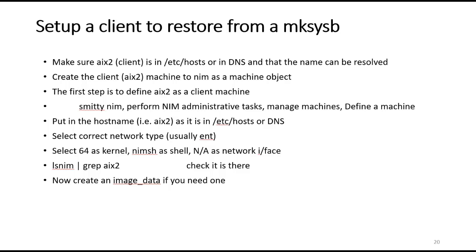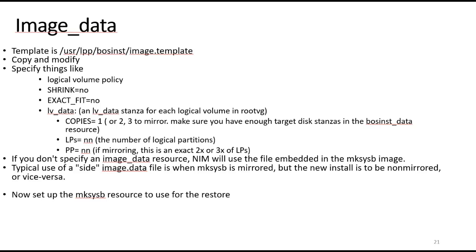A couple of things to note: the kernel should be 64-bit, and more recently the shell has been changed — it used to default to rshell, which was very insecure; we now use NIM shell, which is a secure shell. You may also need to create an image data file; otherwise it will use the default image data embedded in the makesysb image. If that makesysb was taken from a mirrored root VG, that could be problematic. You can grab the image template from /usr/lpp/bos/inst and modify it, creating an image data file as a resource — for example, setting logical volume policy exact_fit=no and copies=1 so a restore from a mirrored root VG doesn't require two disks.